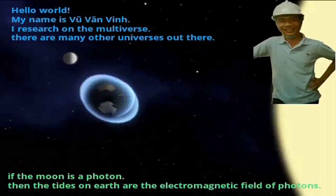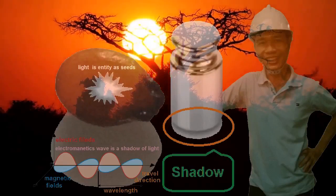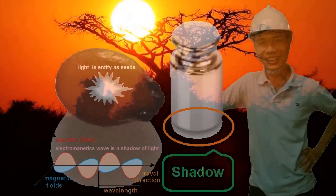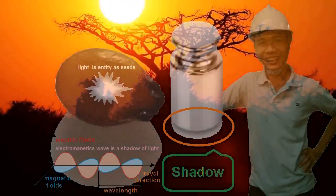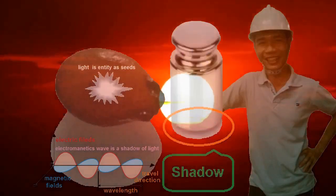Today we experiment with light. My research is that light is similar to a seed - it has mass, gravitational force, and density. The electromagnetic field is the shadow of the seed.